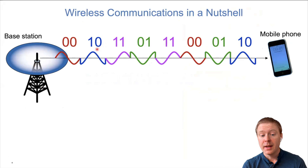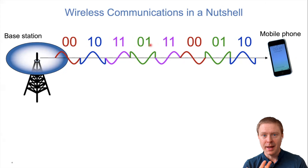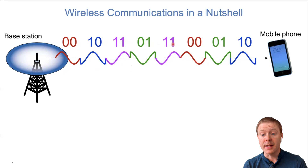Every time we communicate, we divide our sequence of zeros and ones into small segments that we transmit by mapping them onto different radio waves. When I transmit zero-zero, I send a wave with a particular shape; one-zero has another shape; one-one a third shape; zero-one a fourth shape. Next time I send one-one I use the same shape again. This is essentially how wireless communication works.